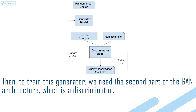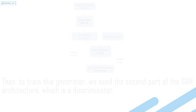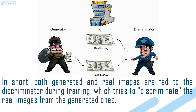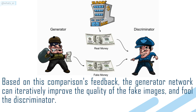To train this generator, we need the second part of the GAN architecture, which is a discriminator. Both generated and real images are fed to the discriminator during training, which tries to discriminate the real images from the generated ones. Based on this comparison's feedback, the generator network can iteratively improve the quality of the fake images and fool the discriminator.